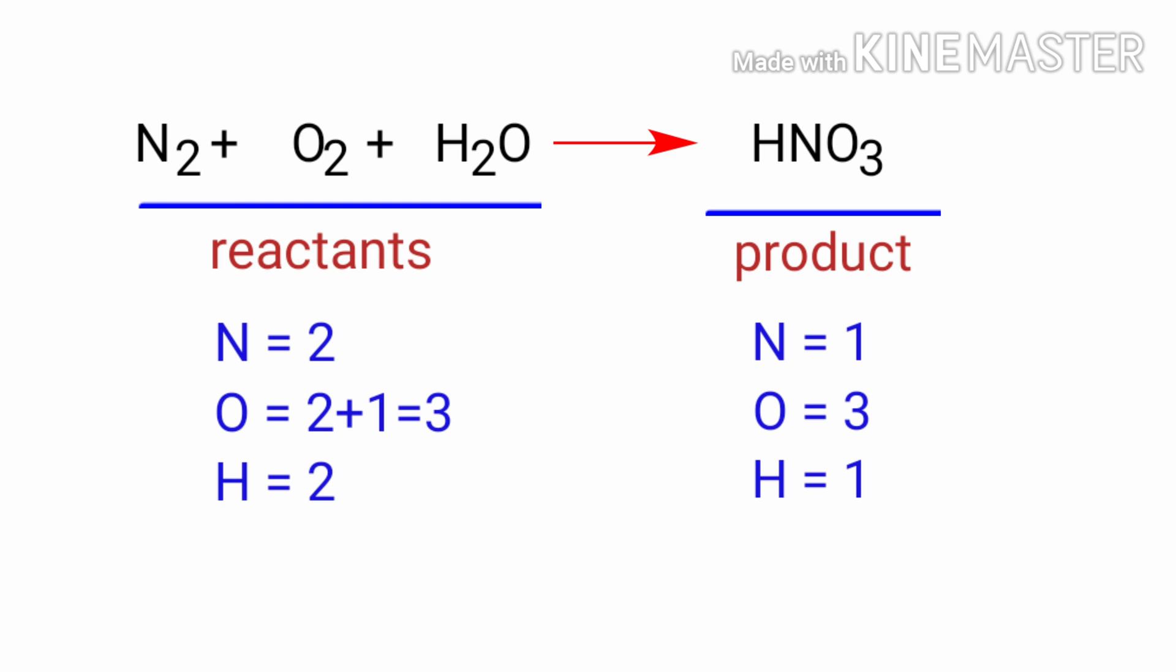In this equation, we need to balance the nitrogen and hydrogen atoms. To do this, we need to put a coefficient of 2 in front of HNO3.